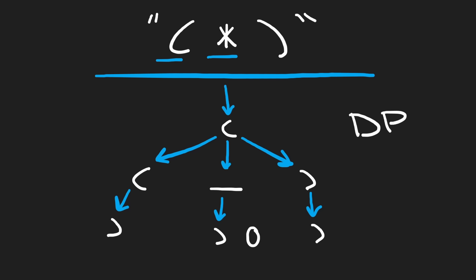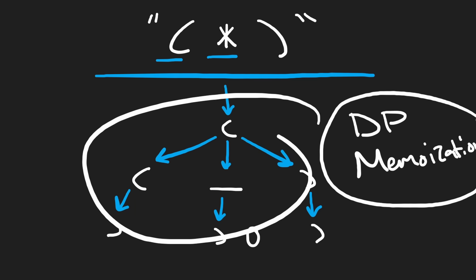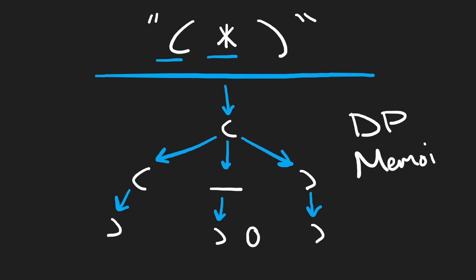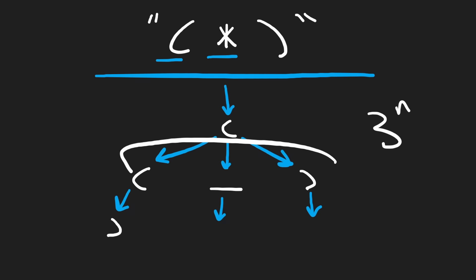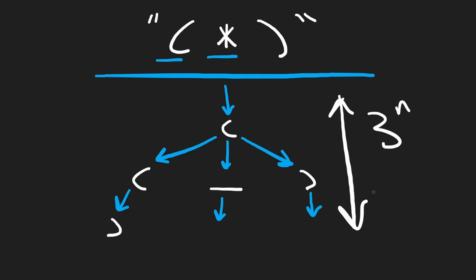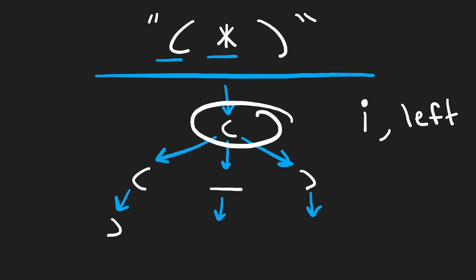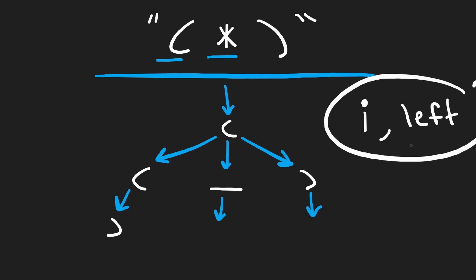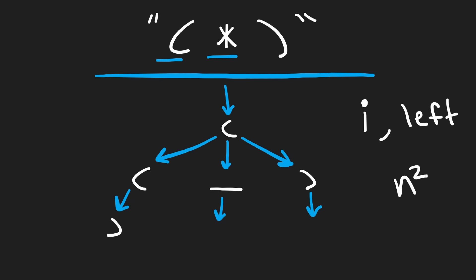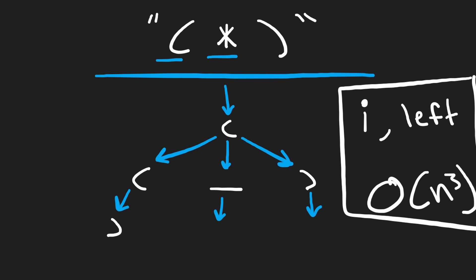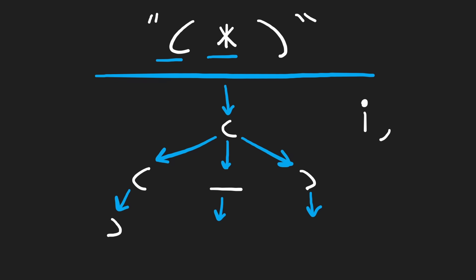You can actually add dynamic programming — specifically memoization — to this recursive solution, and I'll link the code for that in the description. The brute force solution is in the worst case O(3^n) because that's how many branches we have. But when you add memoization, the overall time complexity actually becomes O(n³). The way we do that is by caching with two parameters: one is i, the index of the position we're at, and the other is the number of left open parentheses at that position. This gives us an n-squared matrix, and calculating each value takes O(n) time.